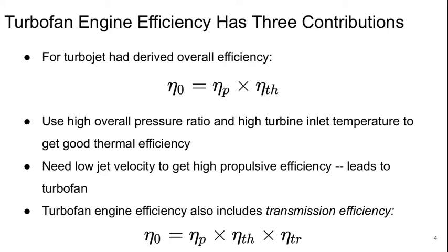Turbofan engines actually have three contributions to efficiency. For the turbojet we previously derived that overall efficiency was the product of propulsive and thermal efficiencies. We know that using a high overall pressure ratio and a high turbine inlet temperature will help get good thermal efficiency. We also know that we need low jet velocities to have high propulsive efficiencies, and this is what led to the idea of the turbofan in the first place.